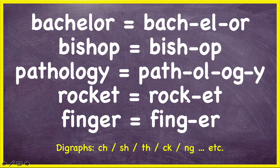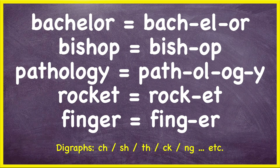'Rocket' — the CK stays together, rock-it. And 'finger' — fin-ger, because you want to keep those together. Remember that in the word 'finger,' the E-R is not a suffix, because the ER at the end of the word has nothing to do with comparison — it's not like 'better' or 'faster' or 'quicker.' It's 'finger' — completely different. Just like the word 'morning,' M-O-R-N-I-N-G, has nothing to do with the present continuous tense I-N-G.